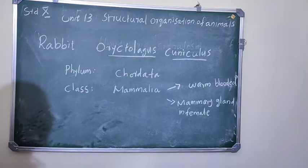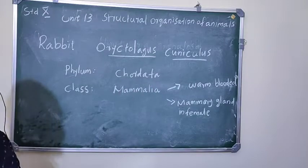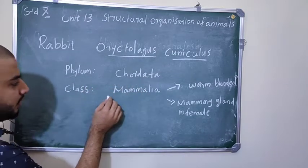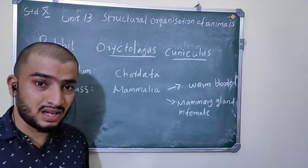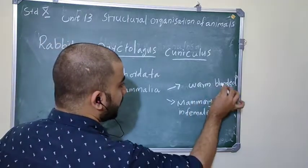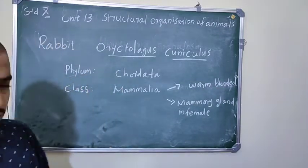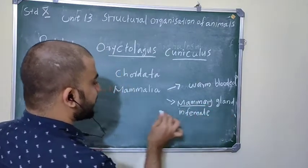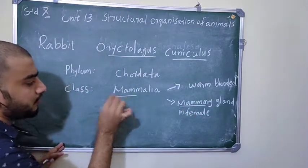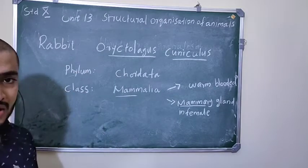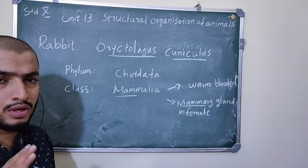Rabbit's scientific name is Oryctolagus cuniculus. Rabbit comes from Phylum Chordata — an advanced phylum — and they have a vertebral column. They belong to Class Mammalia, which is more advanced. Important points: they are warm-blooded animals. Animals are of two types — cold-blooded and warm-blooded. Mammary glands are present in females, which is why the name Mammalia comes. Rabbit is from Phylum Chordata, and leech is from Phylum Annelida.